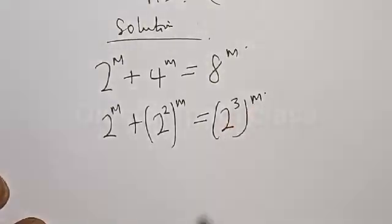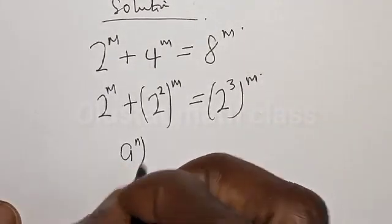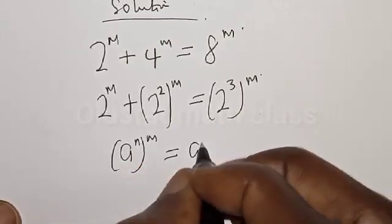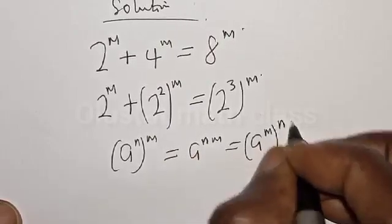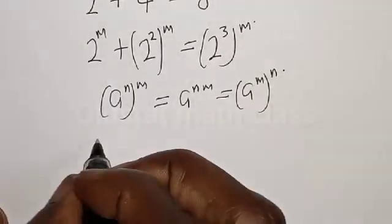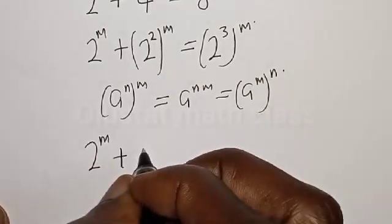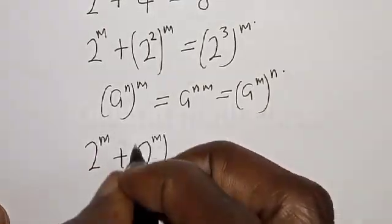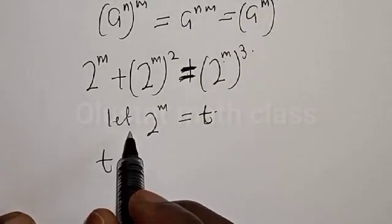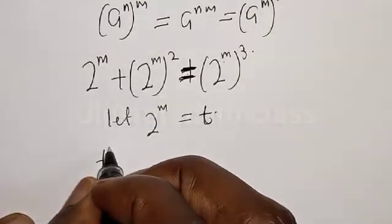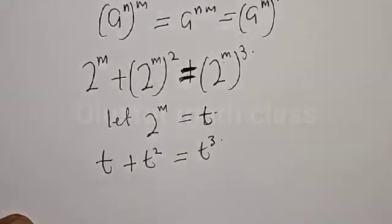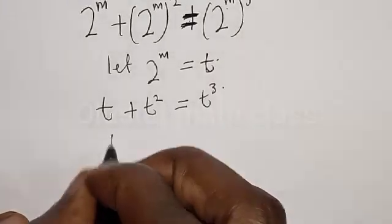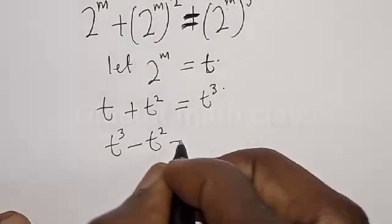Remember, if you have a raised to power m raised to power n, that is the same as a raised to power mn. So we get 2 raised to power m plus 2 raised to power 2m is equal to 2 raised to power 3m. Let t equal 2 raised to power m. Therefore we have t plus t squared is equal to t cubed.